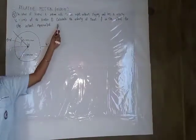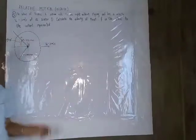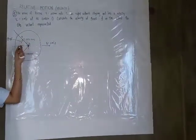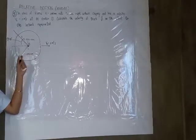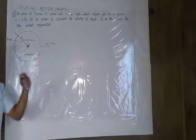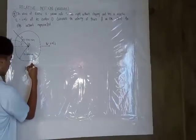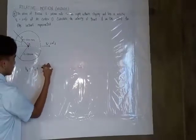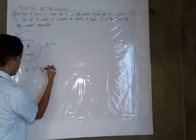In this problem, we have to calculate the velocity of point A on the wheel. In the figure, we have the given positions of point A and point O. To get the velocity at point A, we use the formula: velocity of A equals the initial velocity (V_O) plus the velocity of A relative to O (V_{A/O}).